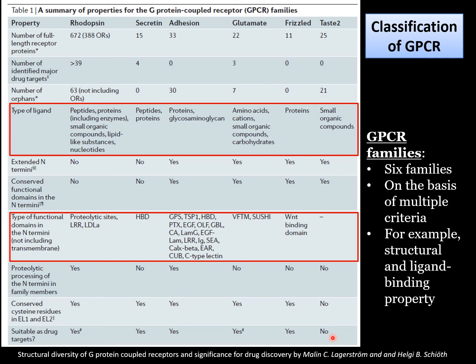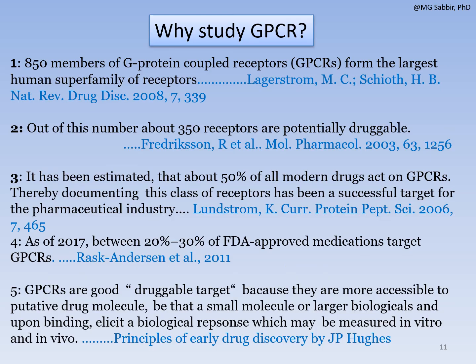Most GPCR families are suitable as drug targets except Taste 2. One reason is that Taste 2 receptors are very localized in the taste-sensitive organ — the tongue — and there are not many diseases of sufficient pharmaceutical importance to justify developing drugs for tongue-related conditions.